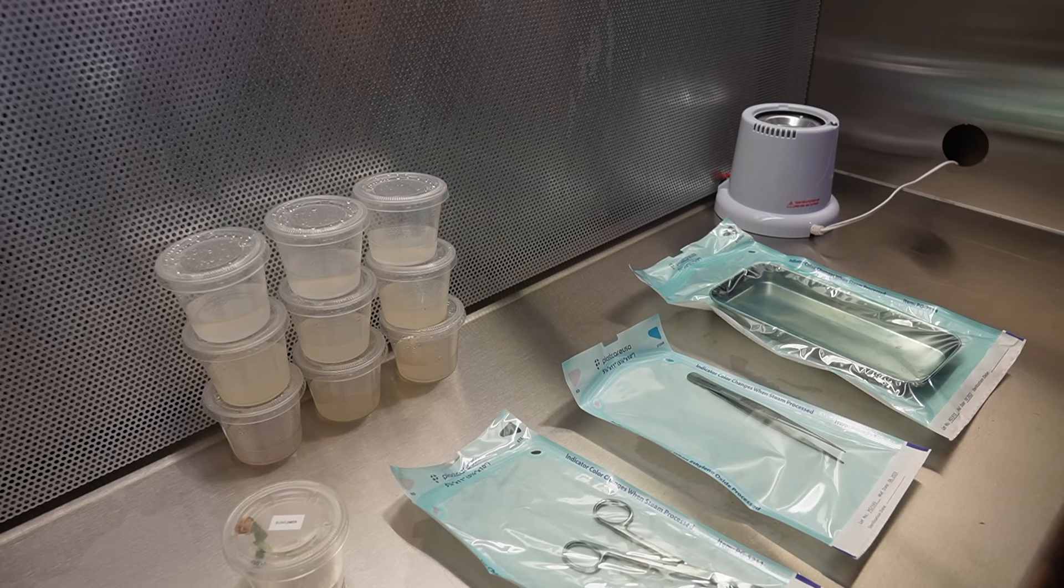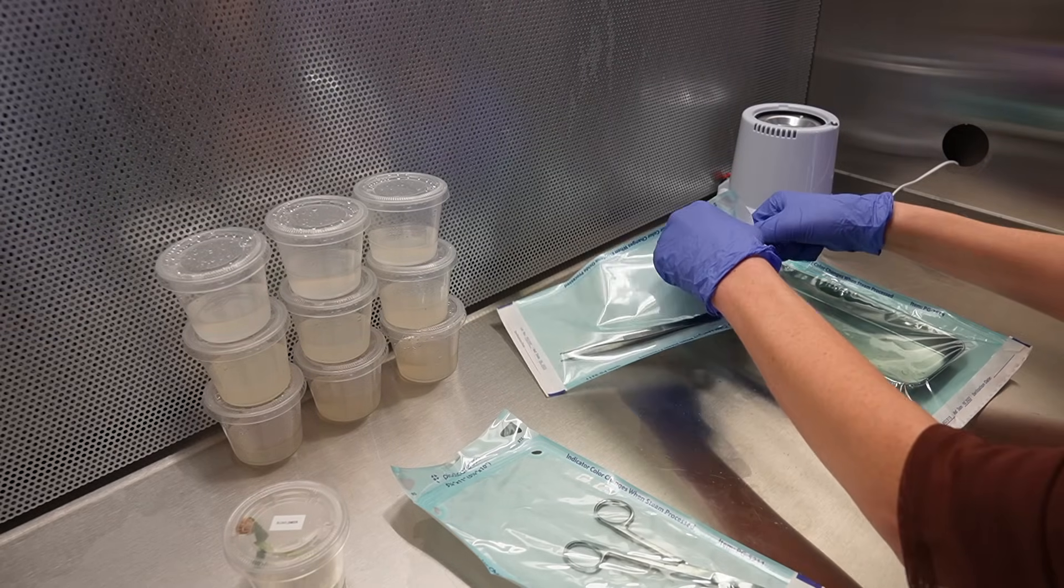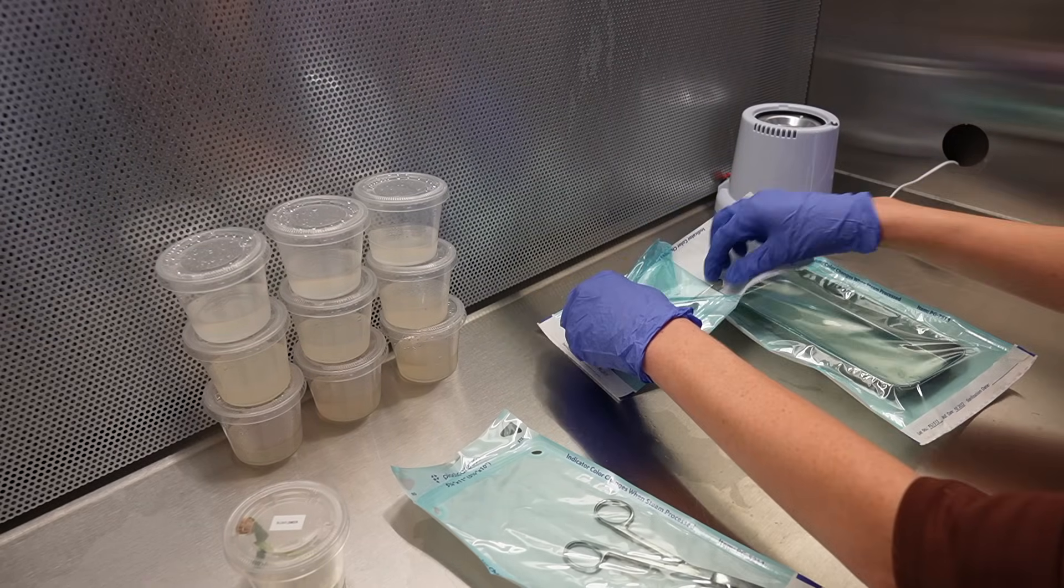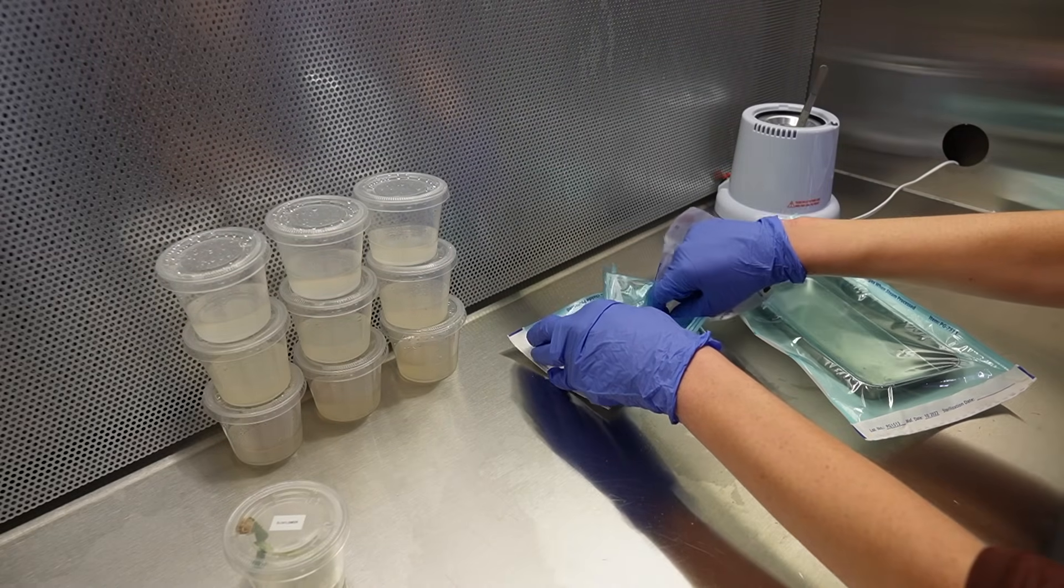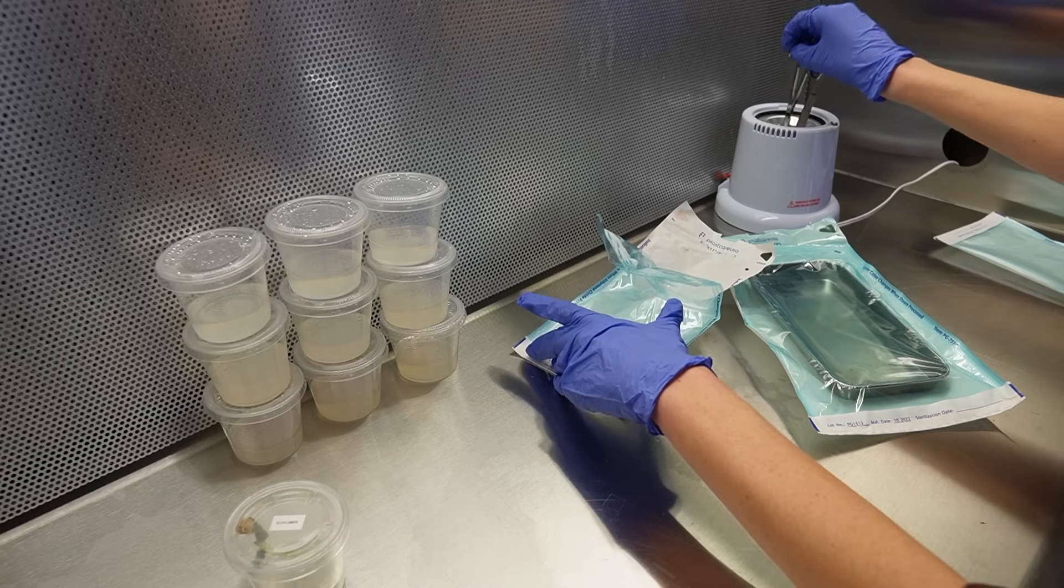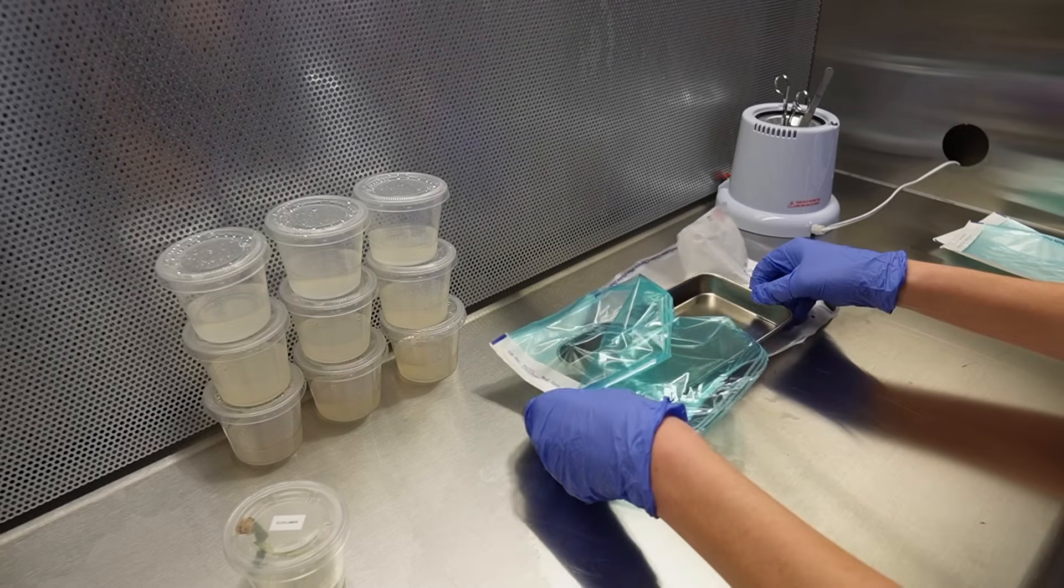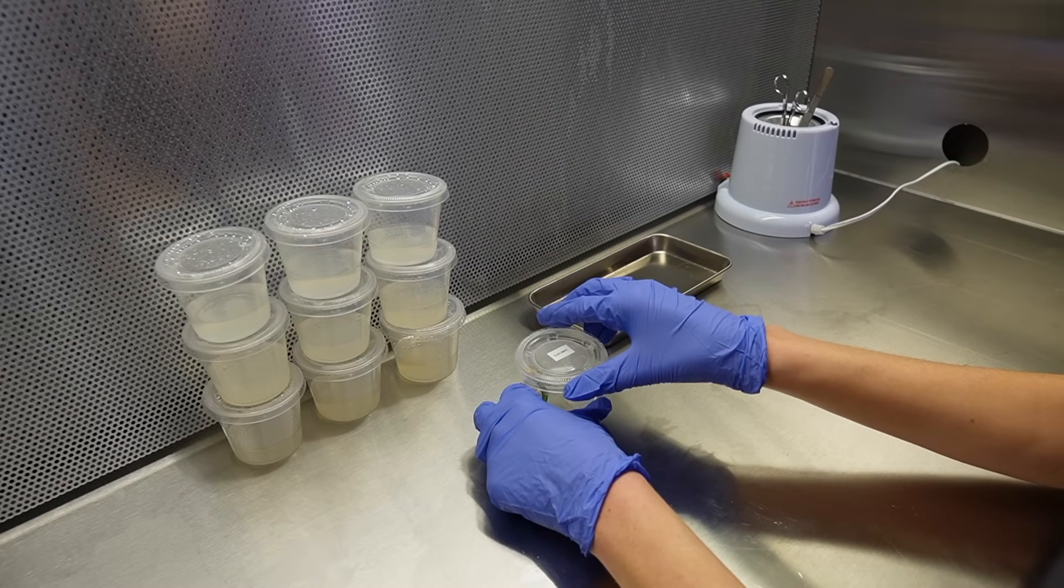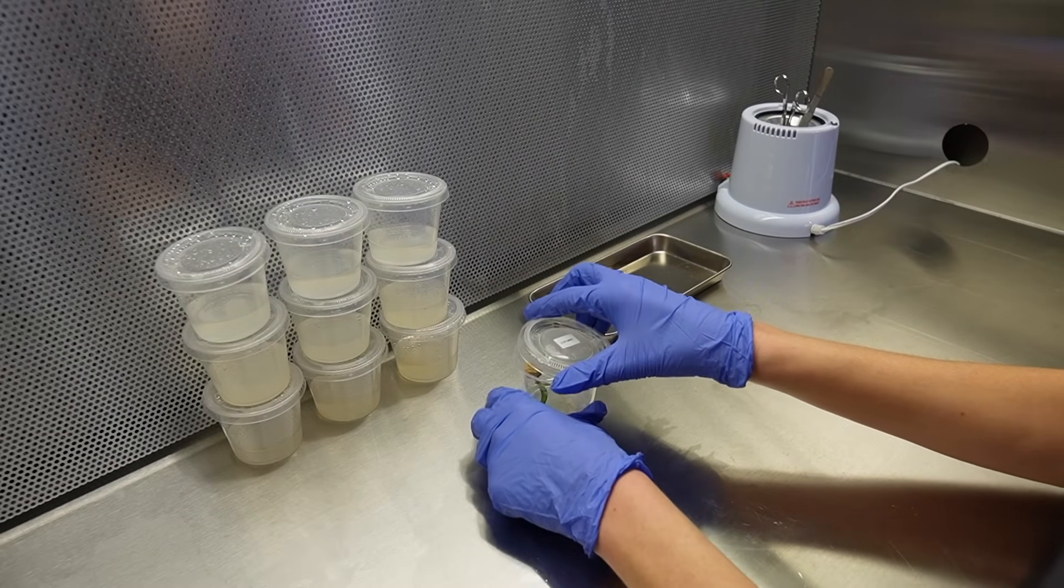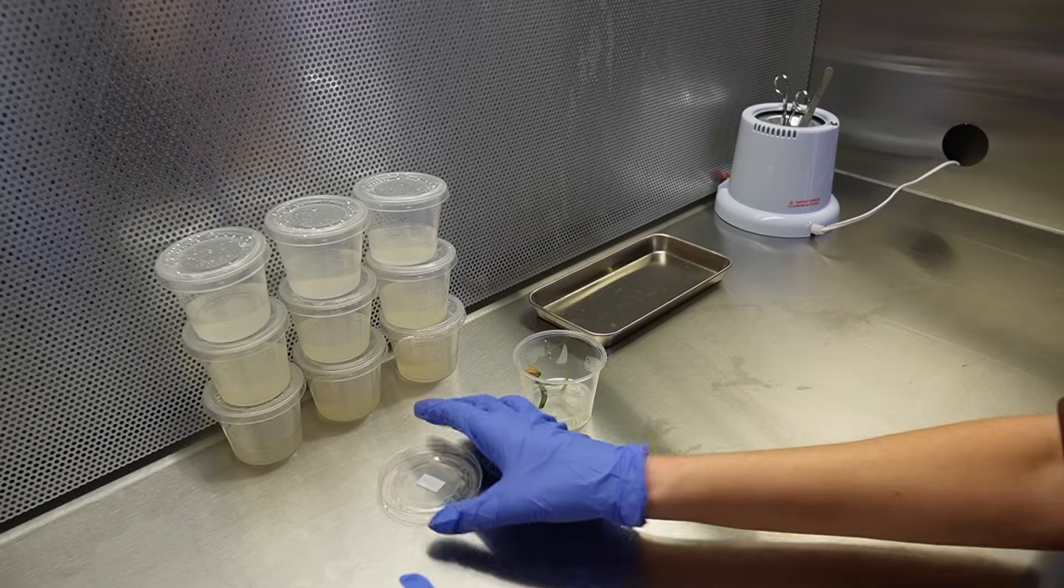For the flow hood, I have my glass bead sterilizer, forceps, my multiplication media, and my seedlings that we grew earlier in this video. I also have a stainless steel tray and a pair of stainless steel scissors, both of which have been sterilized in an autoclave. You could also use a pressure cooker to sterilize these items at home, the same way we sterilized the forceps earlier.